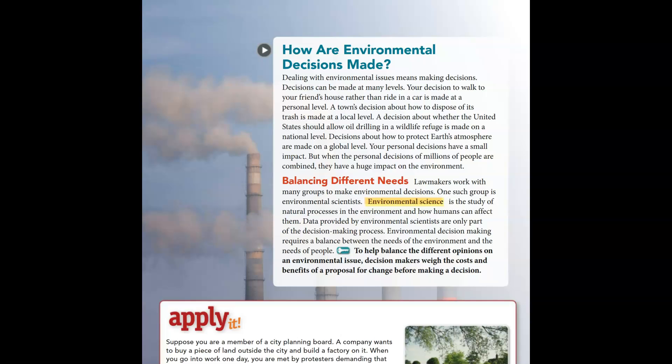Lawmakers work with many groups to make environmental decisions, including environmental scientists. Environmental science is the study of natural processes in the environment and how humans can affect them. Data provided by environmental scientists are only part of the decision-making process. Environmental decision-making requires a balance between the needs of the environment and the needs of people. Decision-makers weigh the costs and benefits of a proposal for change before making a decision.